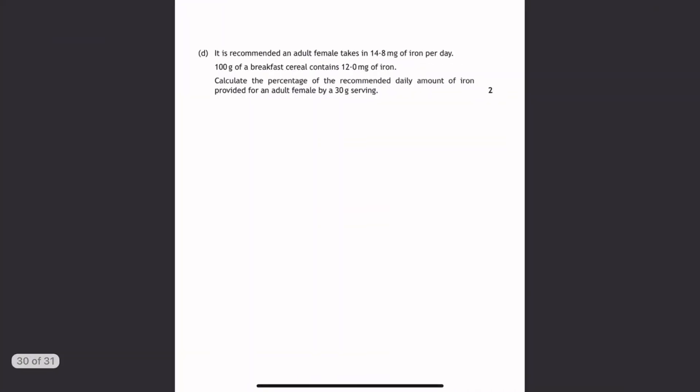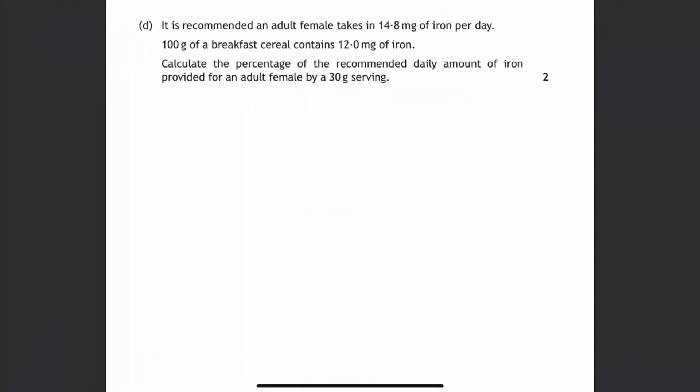If we go on to the next example. It's recommended an adult female takes in 14.8 milligrams of iron per day. 100 grams of a breakfast cereal contains 12 milligrams of iron. Calculate the percentage of recommended daily amount of iron provided for an adult female by a 30 gram serving. So there's a lot of information there. I'm going to start pulling out the numerical relationships.